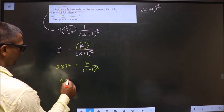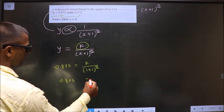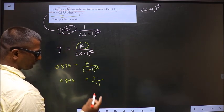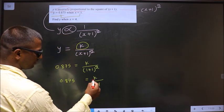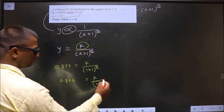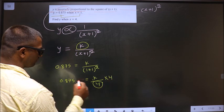So 0.875 equal to k by 1 plus 1 is 2. 2 square is 4. So now, to get k, I should remove 4. So to remove 4, multiply by 4 on both sides.